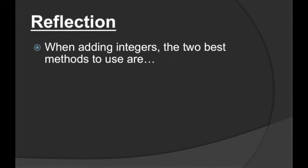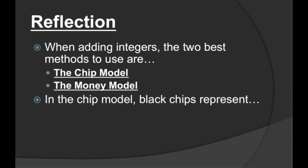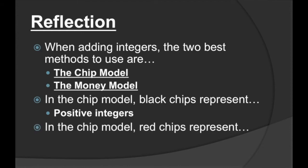Our reflection. When adding integers, the two best methods to use are the chip model and the money model. In the chip model, black chips represent positive integers, and red chips represent negative integers. Remember, the chip model is excellent for smaller integers. The money model is actually beneficial for larger integers — it's a lot more practical. You'll actually add bigger integers more than smaller ones, so be very comfortable with the money model.